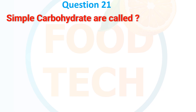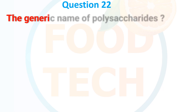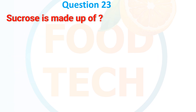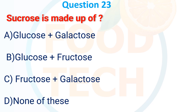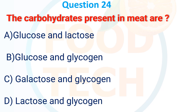Question 19: Simple carbohydrates are called — A. Sugar, B. Sucrose, C. Monosaccharide, D. None of these. The answer is A. Sugar. Question 20: The generic name of polysaccharide — A. Glucan, B. Glycogen, C. Glycan, D. Peptosin. The answer is C. Glycan. Question 21: Sucrose is made of — A. Glucose and Galactose, B. Glucose and Fructose, C. Fructose and Galactose, D. None of these. The answer is B. Glucose and Fructose.